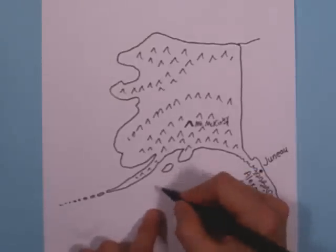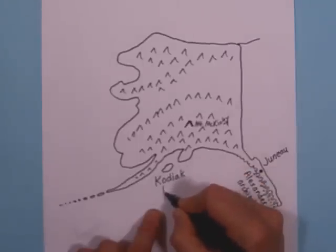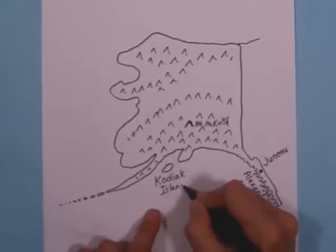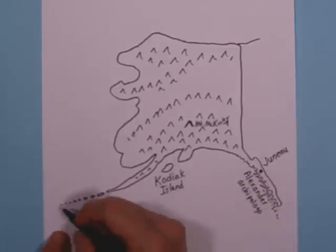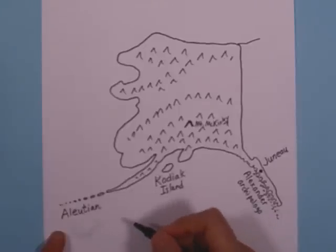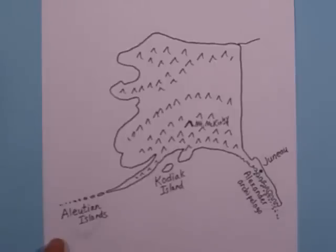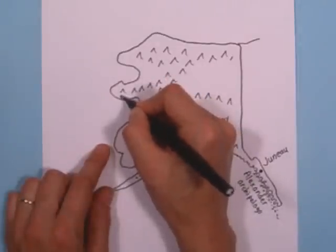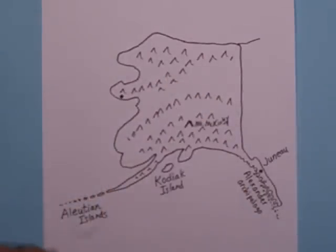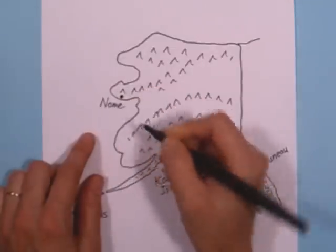Let's label this island Kodiak — K-O-D-I-A-K — just like Kodiak bears, it's Kodiak Island. And these islands are called the Aleutian Islands, A-L-E-U-T-I-A-N. Let's put a city right on the nose, right where the nostril would be. It's Nome — N-O-M-E — Nome, Alaska.